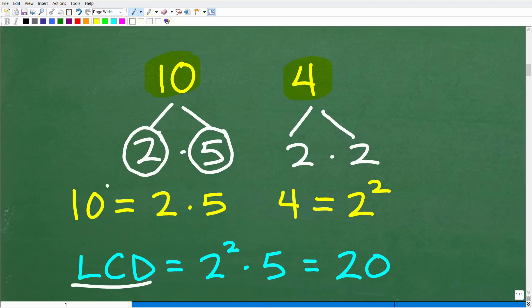You want to prime factor each of the denominators. You may have more than just 2 denominators, so whatever amount of denominators you have, just prime factor them.